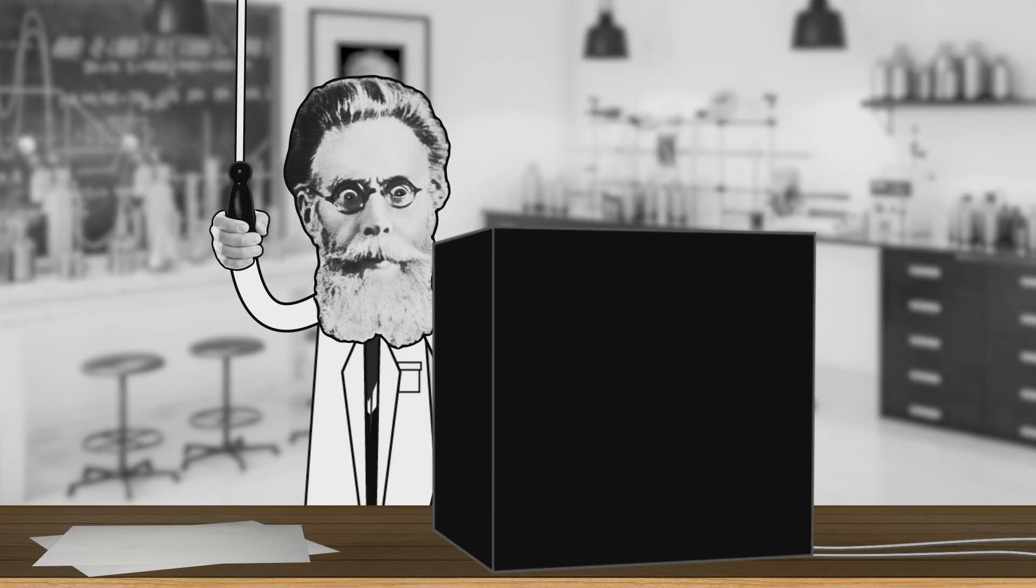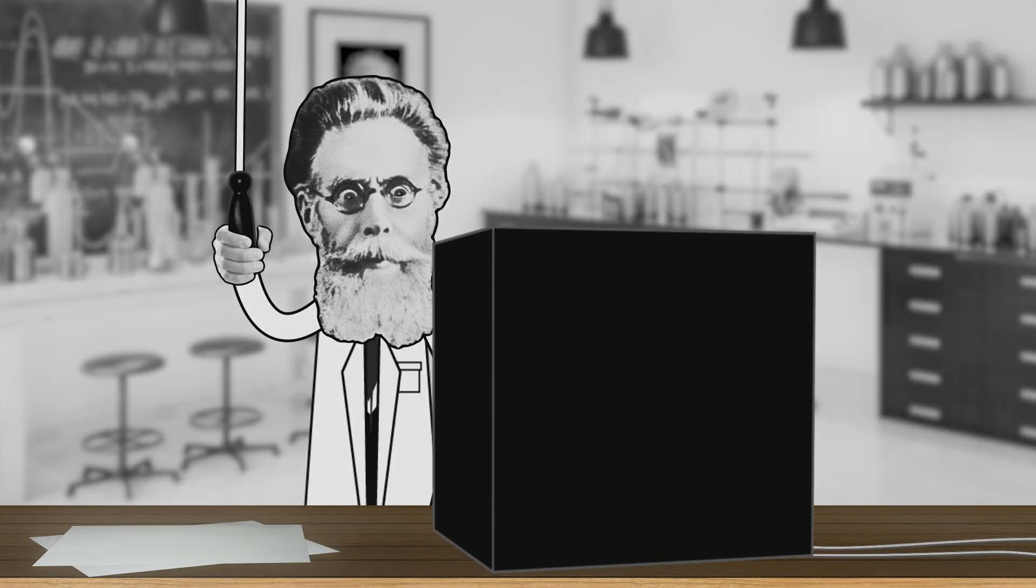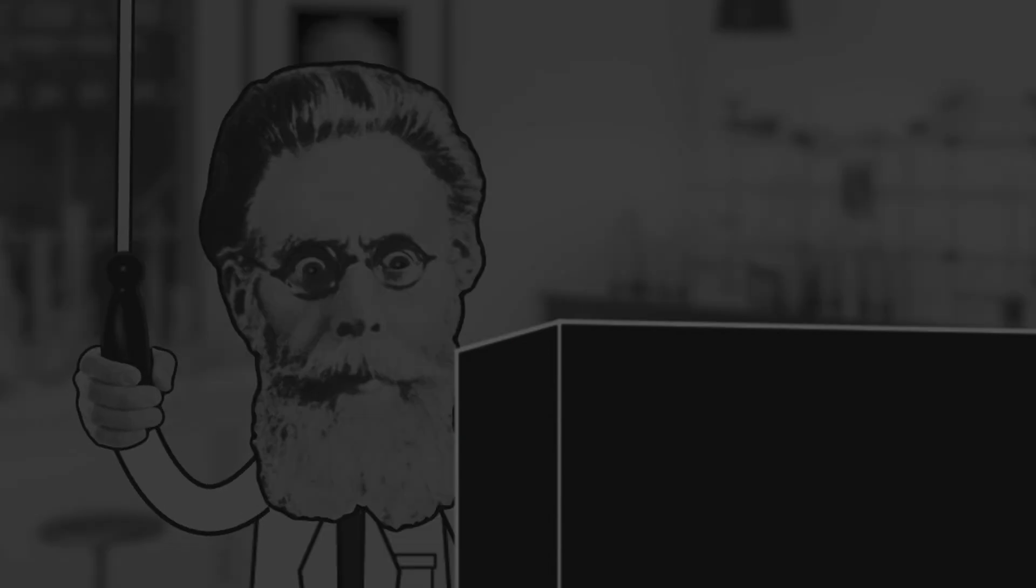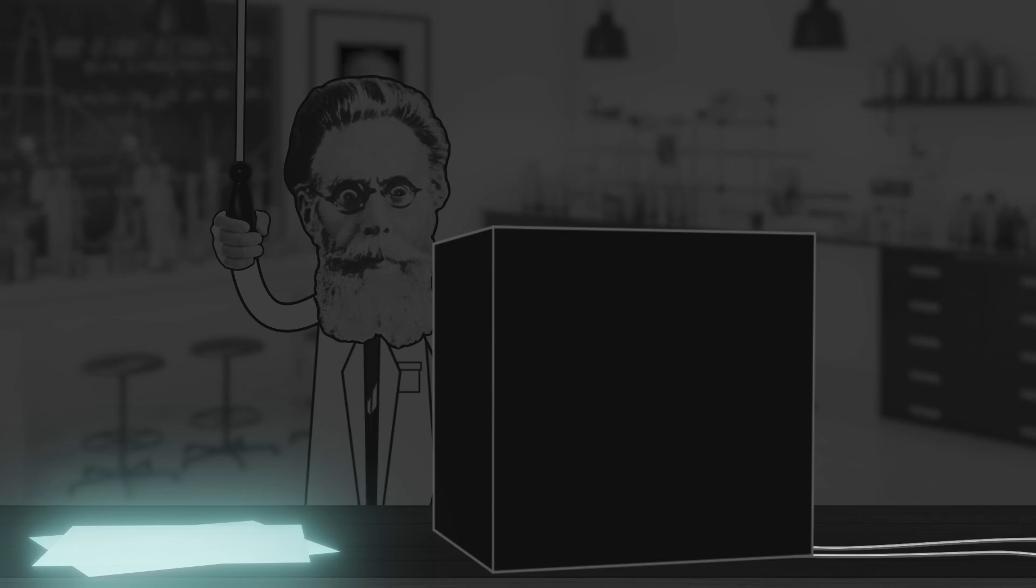So Wilhelm uses the age old highly accurate experimental procedure that we all know of as the switch it off, switch it on again method. He's able to confirm that the glowing sheet is being produced by something invisible coming out from the Crookes tube. But what?